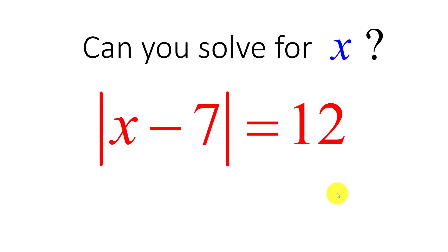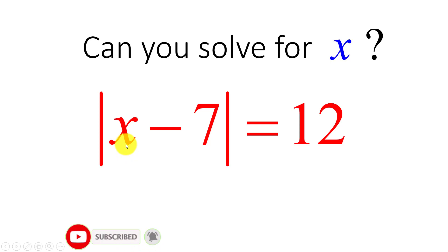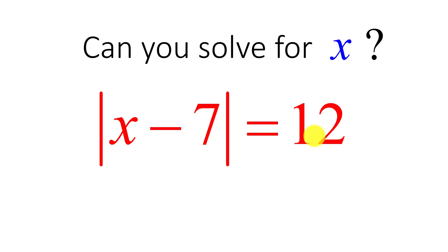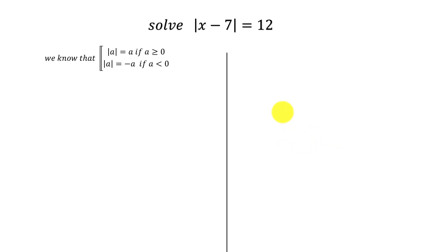Hello everyone, welcome to Education Key H&L. Today I have one exercise about the equation with absolute value solution. Can you solve for it? We have the equation: the absolute value of x minus 7 equals 12. Before we go to the solution, please subscribe to my channel, like and share the video with your friends.